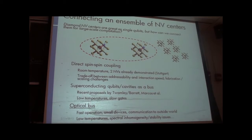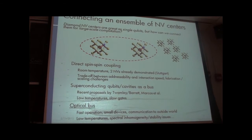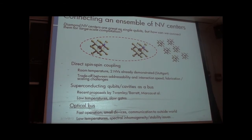The approach our group is interested in is using an on-chip optical network to connect NV centers together. Main advantages include the possibility for fairly fast operation limited mainly by the spontaneous emission lifetime of the NV center, micron-scale devices, and the possibility of transmitting quantum information to the outside world at optical frequencies. Disadvantages include the requirement to work at low temperature for narrow optical transitions, and difficulties with spectral inhomogeneity and stability of the optical frequency.